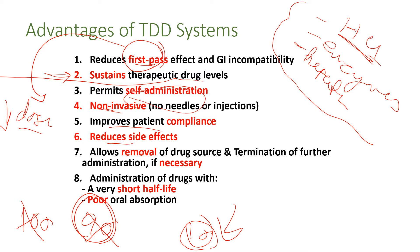Another advantage: if a patient is taking an injection or oral tablet and overdose is discovered, for oral administration a gastric wash is needed, which is time consuming and requires hospitalization. In the case of injection, it may sometimes be possible to reverse or stop the drug action. But in the case of transdermal, we can simply remove the patch and everything will be okay — easy stopping and easy termination of administration after application on the skin, which is very beneficial.